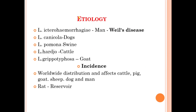Regarding the etiology behind leptospirosis: in human beings it is caused by Leptospira icterohaemorrhagiae, and in humans this disease is known as Weil's disease. In dogs the causative agent is Leptospira canicola. In swine the causative agent is Leptospira pomona. In cattle the causative agent is Leptospira hardjo.